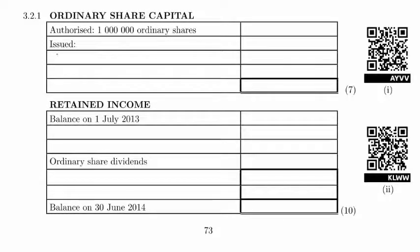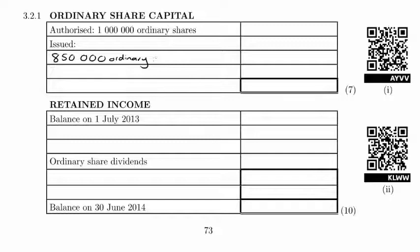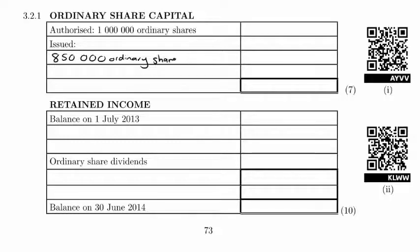We're going to start with the number of shares we had at the beginning: 850,000. They're ordinary shares. You do actually get preference shares and all sorts of fancy shares when you leave school and do hardcore university.